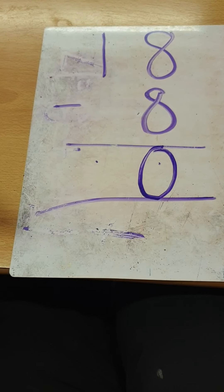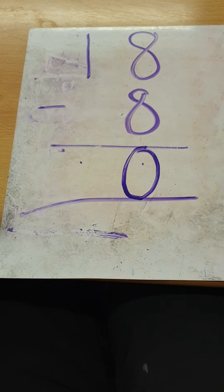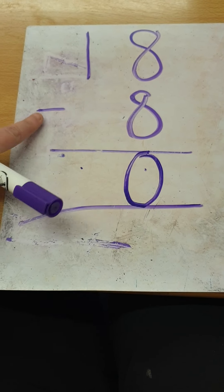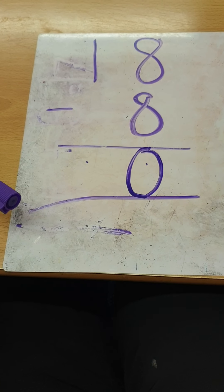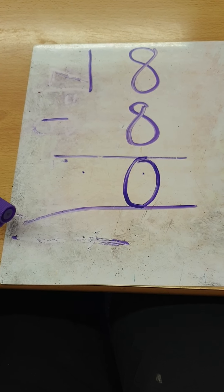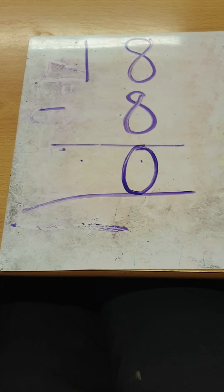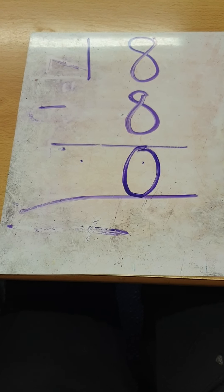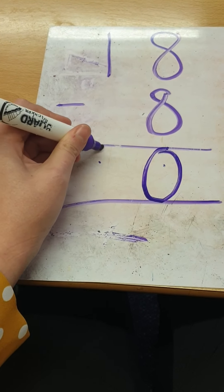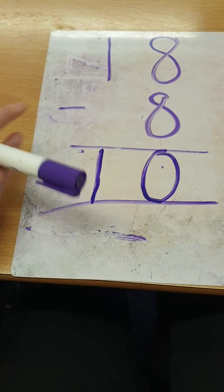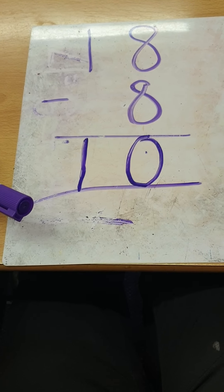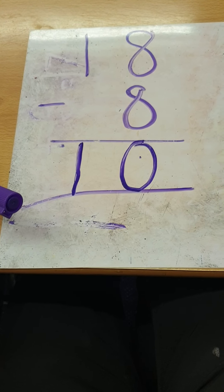Have I finished this sum yet? No, I haven't, because I've still got to do my tens. I've got one ten, take away zero tens. What's the answer to that? It's still one ten, because one take away nothing is one. I'm following my tens column all the way down and making sure I put my one ten underneath the tens. So what number does 18 take away eight make? Fantastic — it makes ten. Well done.